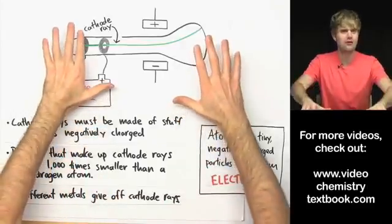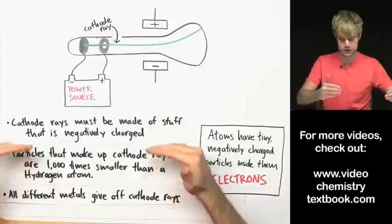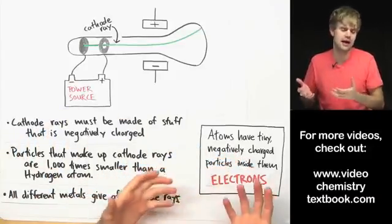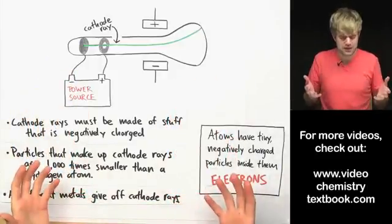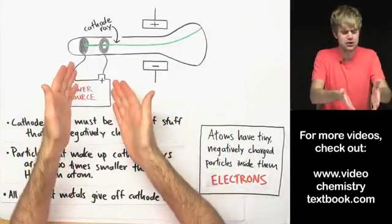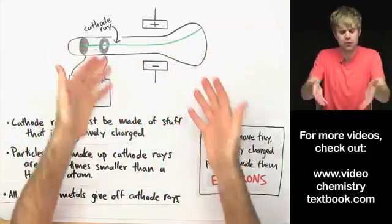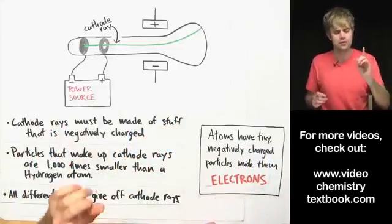Now, if you're like me when I first learned this, you might be confused how these conclusions definitely tell him that there are electrons inside atoms. I remember when I first learned this stuff, I was thinking like, wait doesn't this just show that electricity or cathode rays have negatively charged stuff? How does this tell us anything about the atoms? Here's why.